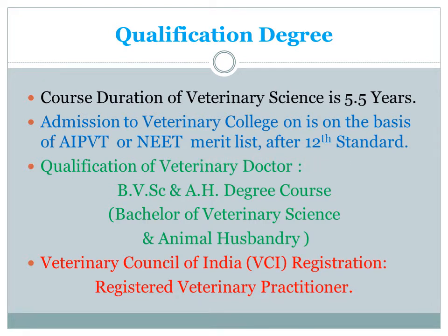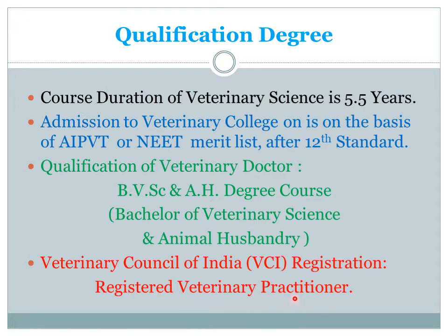After 5.5 years, the veterinary doctor gets the qualification of BVSc and AH — Bachelor of Veterinary Science and Animal Husbandry. After completion of this 5.5-year course, there should be registration as per the Veterinary Council of India, in short VCI. After registration, he becomes a registered veterinary practitioner and is free to perform duties as a veterinary doctor.